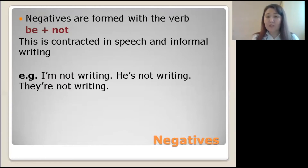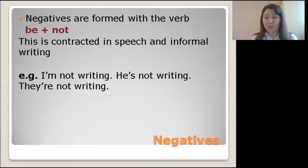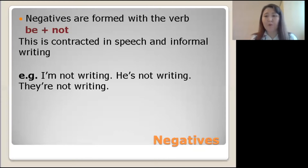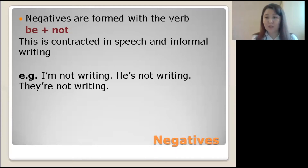Negatives are formed with the verb 'be' plus 'not.' This is also contracted in speech and in informal writing. Examples: 'I am not writing,' 'He is not writing,' 'They are not writing.' Please remember that contractions can be used only in informal writing and informal speech. For academic writing or formal speech, we should use the full form of the auxiliary verb.